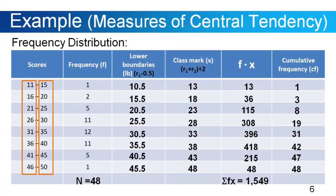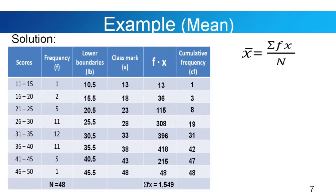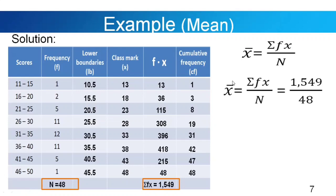Now let's apply our values in our formula, starting with the mean. The formula is x̄ = Σfx / n. We have our value for Σfx equal to 1549, and n is equal to 48. Substituting: x̄ = 1549 divided by 48. So our mean is equal to 32.27.